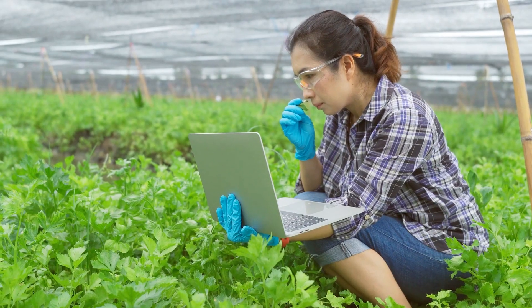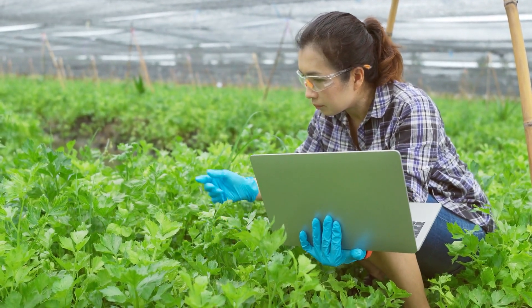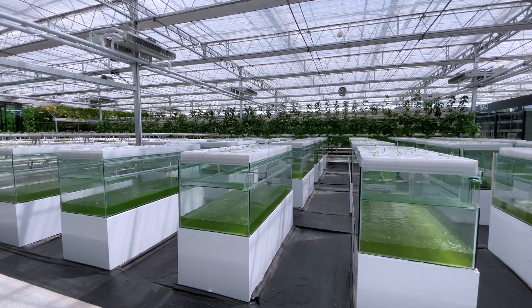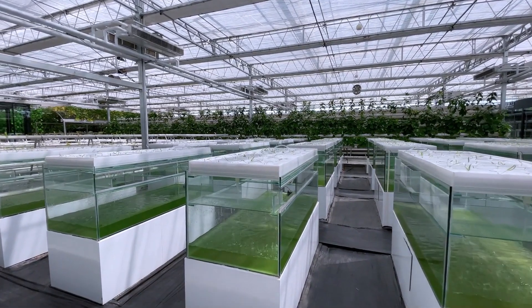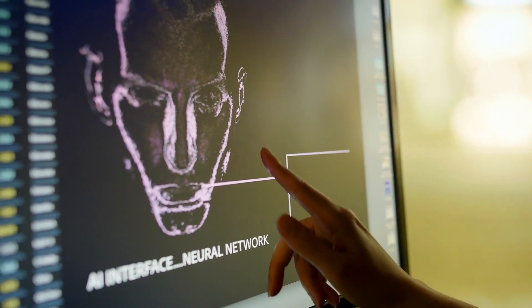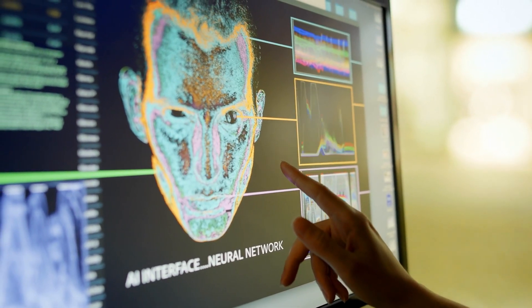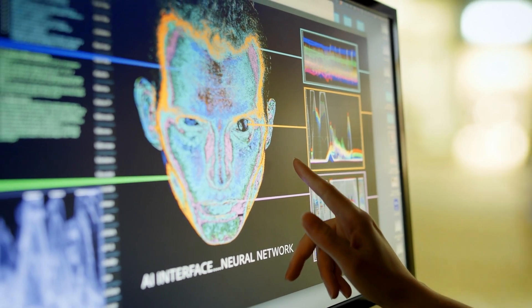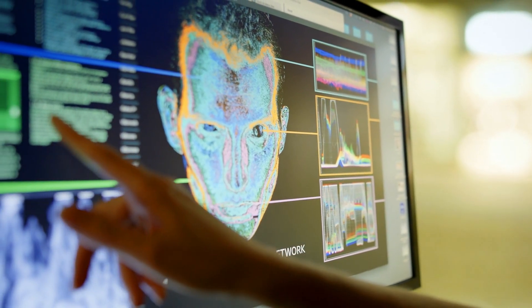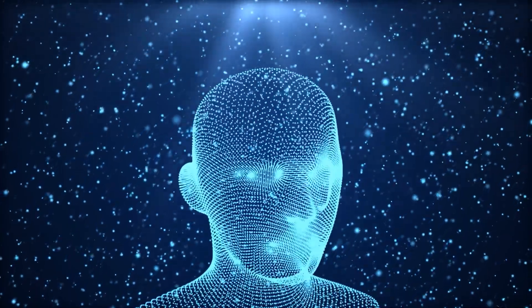In agriculture, AI applications include precision farming techniques such as automated irrigation and crop monitoring systems, as well as predictive analytics for optimizing harvests and improving agricultural productivity. These sectors are just a glimpse into the wide-ranging impact of AI across industries. As AI technologies continue to evolve and become more sophisticated, their potential to innovate and transform various sectors of the global economy continues to expand.